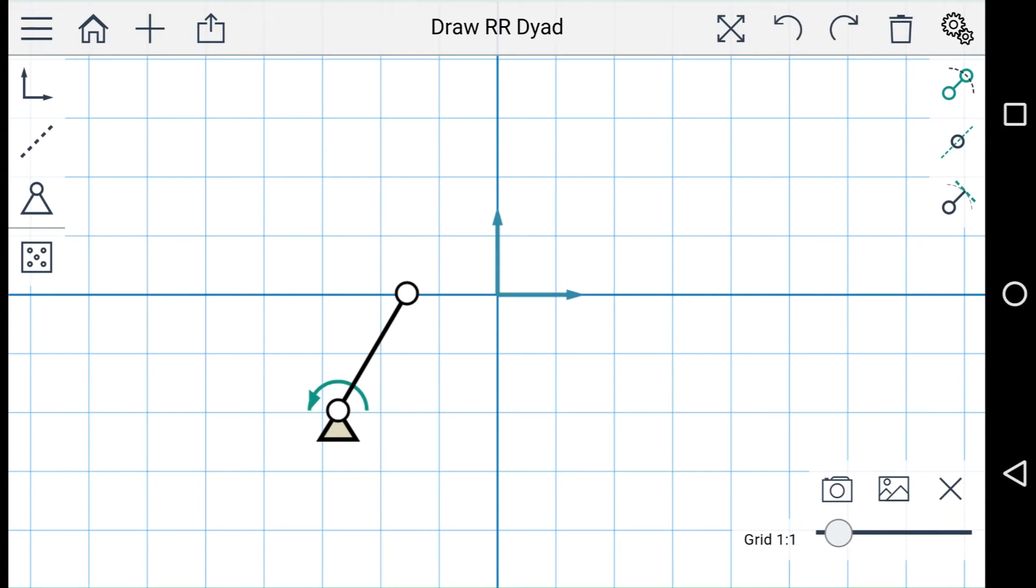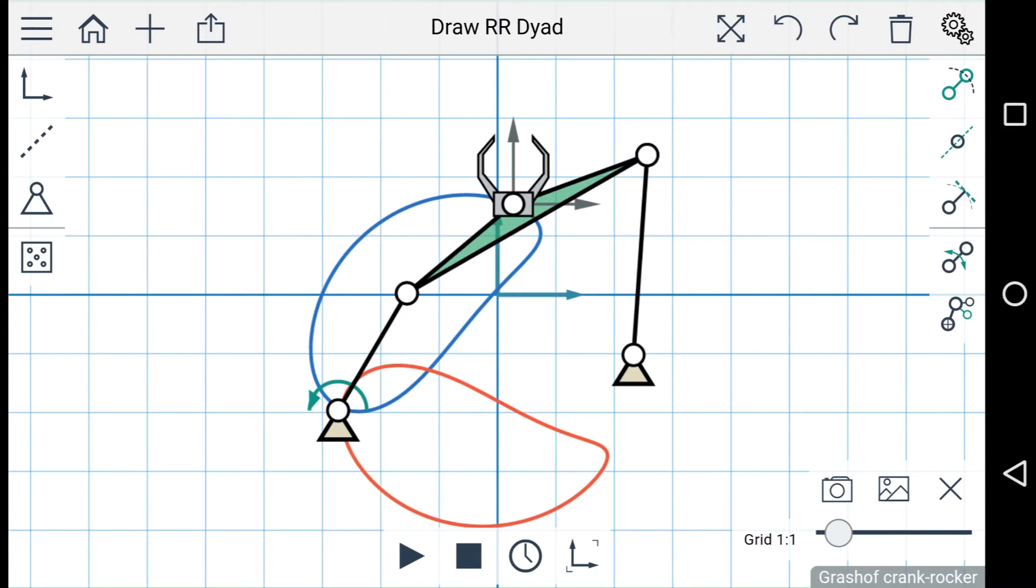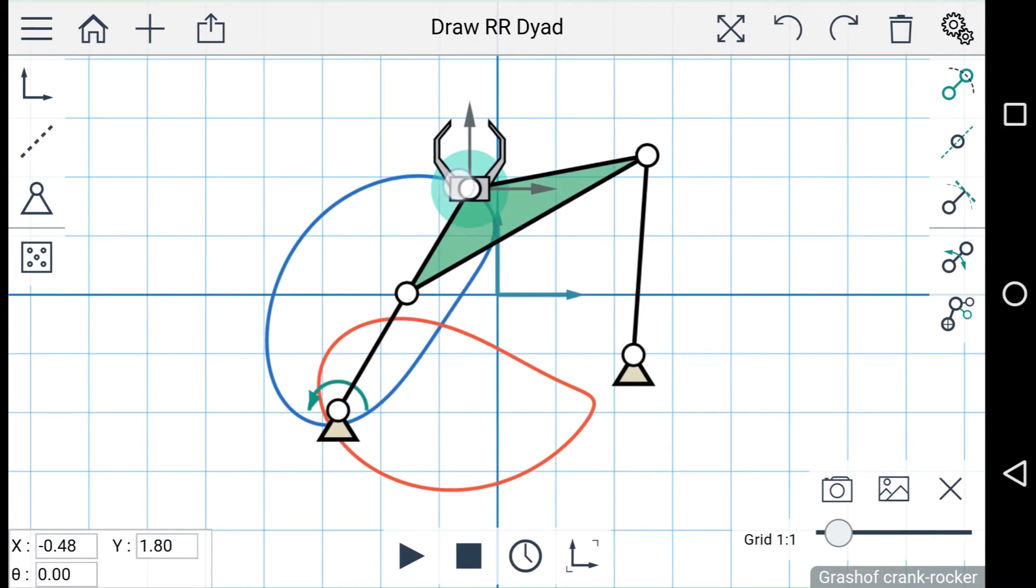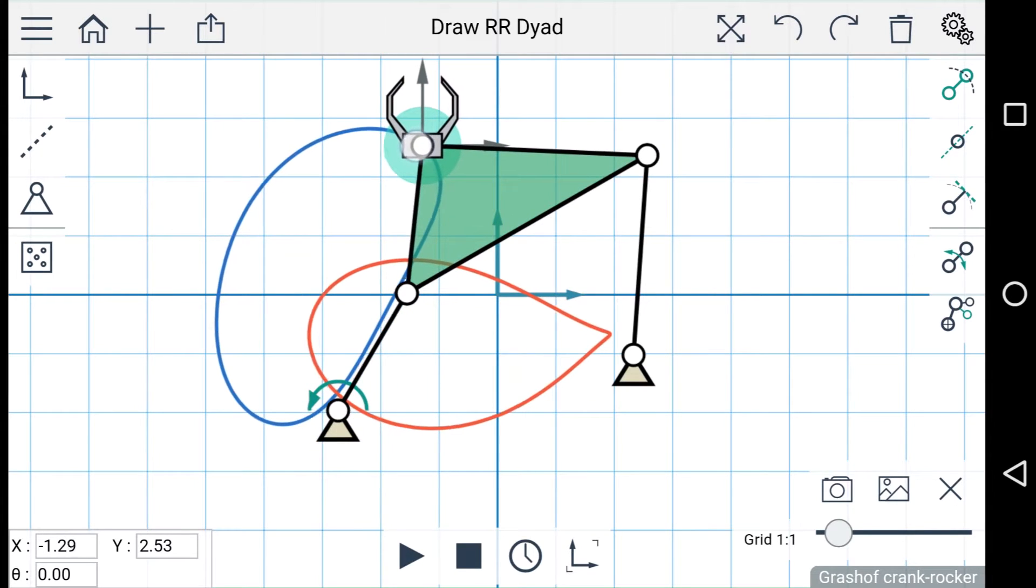Let's add a second RR dyad, and the coupler is generated for you. You can tap and drag the end effector to place it where you'd like, and you can see the coupler curves change as the end effector moves.